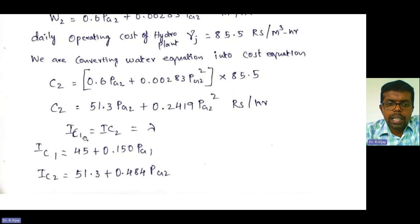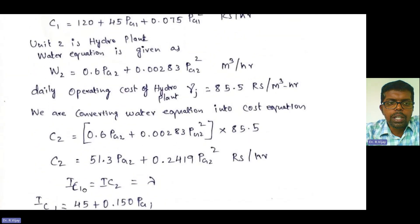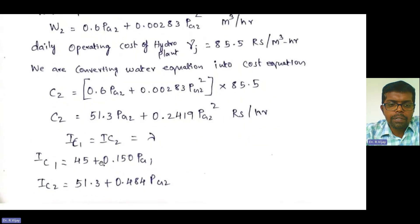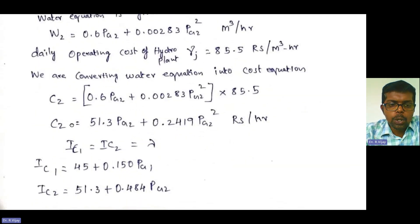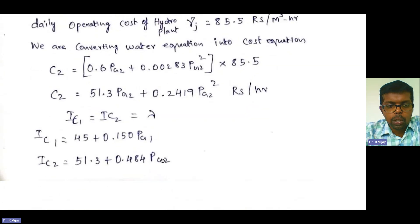Using the general incremental cost condition IC1 = IC2 = λ, we differentiate each cost equation. IC1 = dC1/dPG1 = 45 + 0.150·PG1. IC2 = dC2/dPG2 = 51.3 + 0.484·PG2.